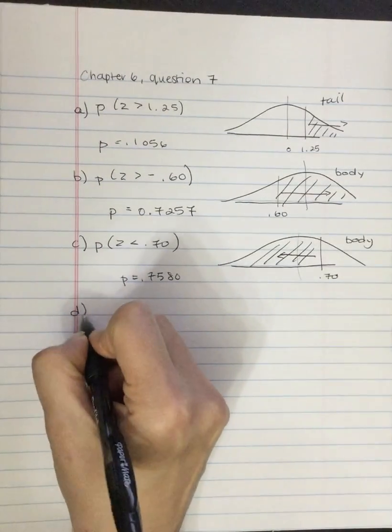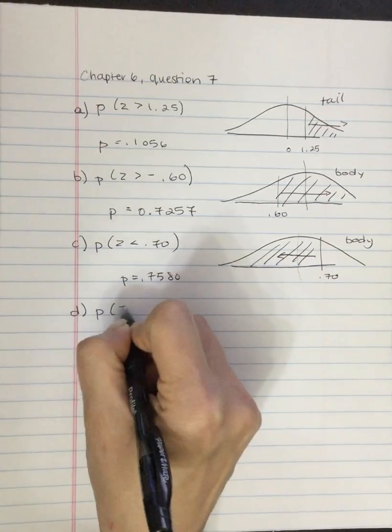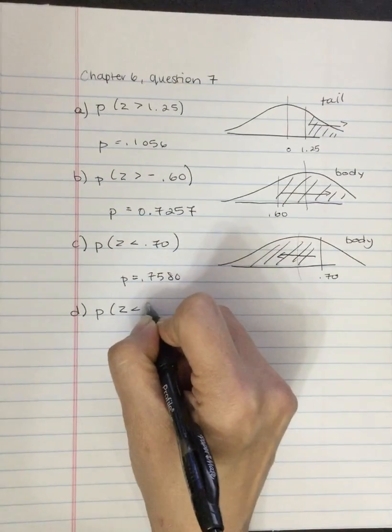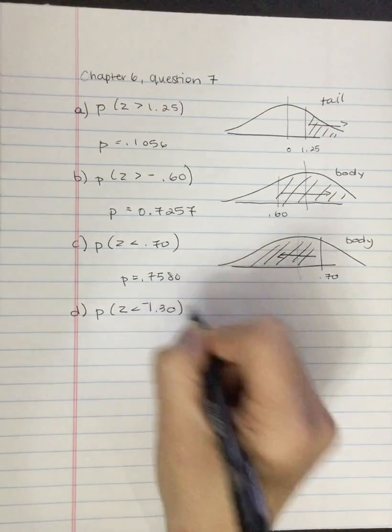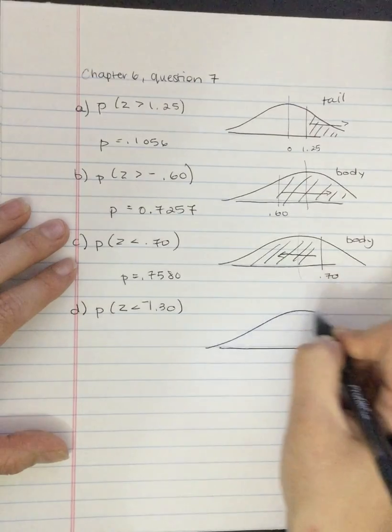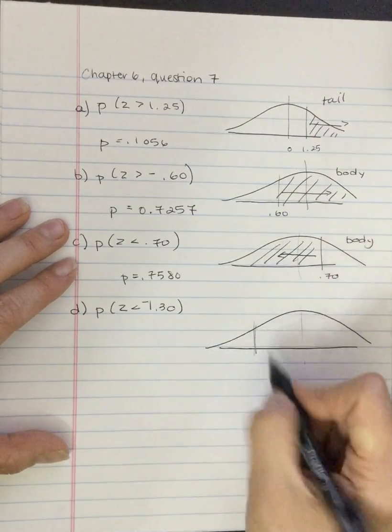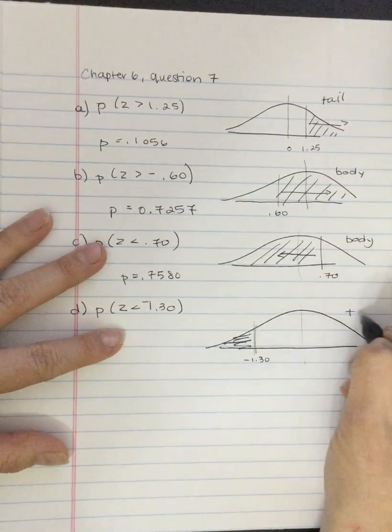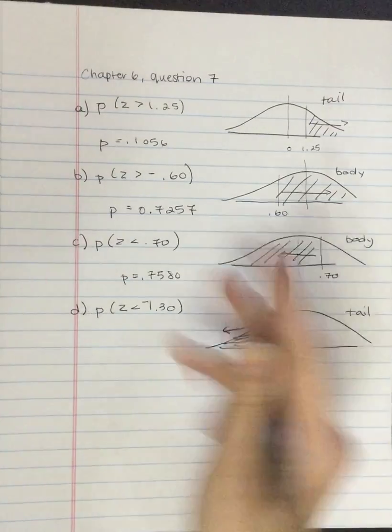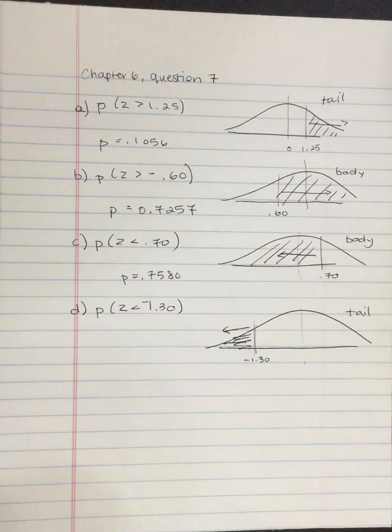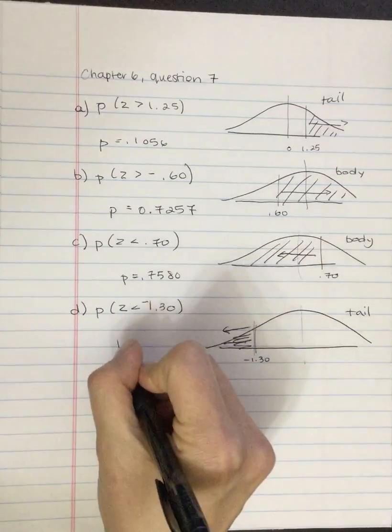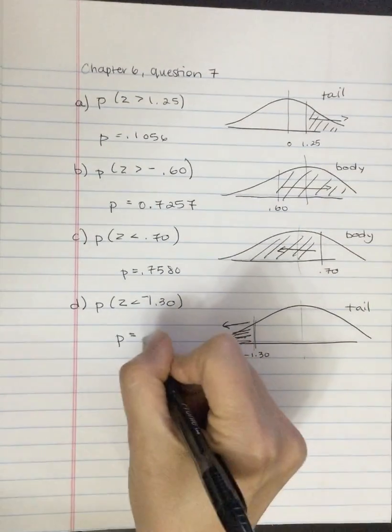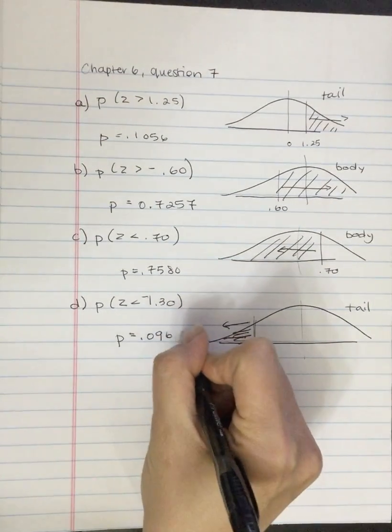Question D, the probability that the Z score is less than negative 1.30. So negative is over here. And we want less than. So we want this part. So we want tail in this case. 1.30, proportion in the tail. That probability P is equal to 0.0968.